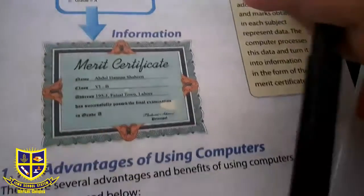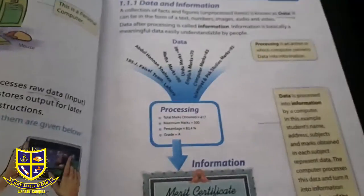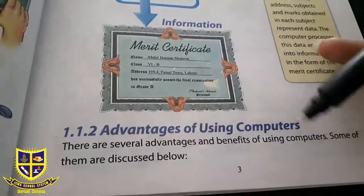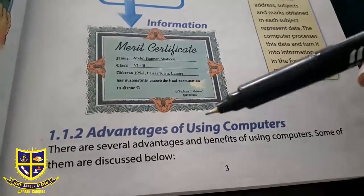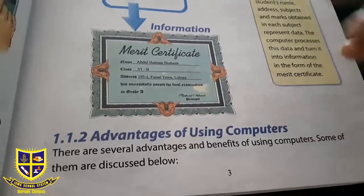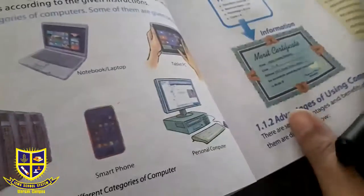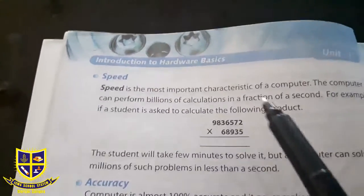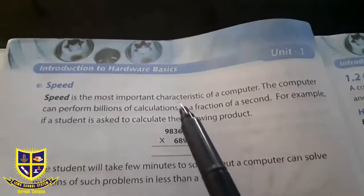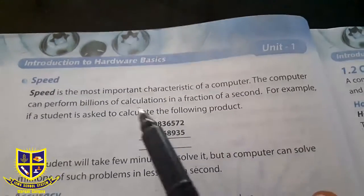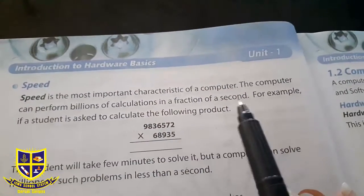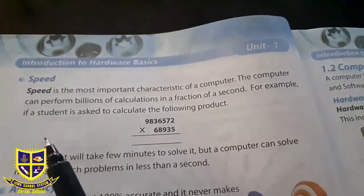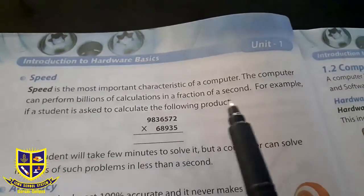Merit certificate की सूरत में आपको information मिली। यह आज का हमारा topic था। Next topic है advantages of using computers। There are several advantages and benefits of using computers. The first sub-topic is speed. Speed is the most important characteristic of a computer. The computer can perform billions of calculations in a fraction of a second.